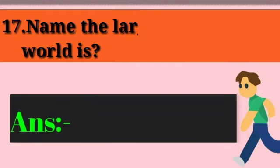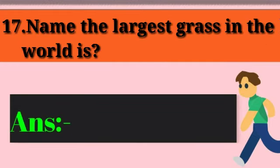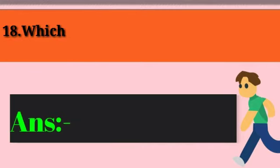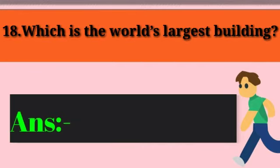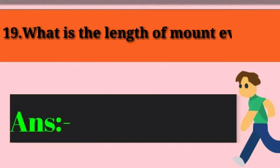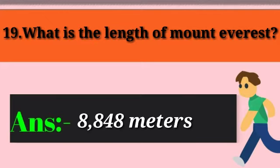Question 17: Name the fastest growing plant in the world. Answer: Bamboo. Question 18: Which is the world's tallest building? Answer: Burj Khalifa, Dubai. Question 19: What is the height of Mount Everest? Answer: 8,848 meters.